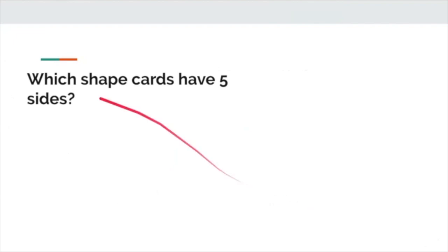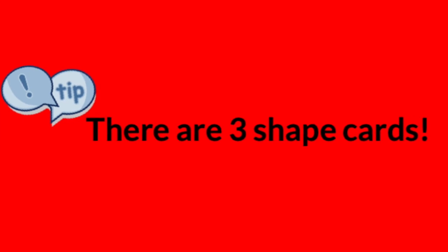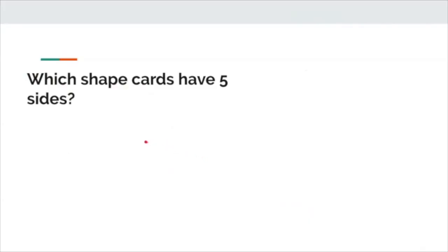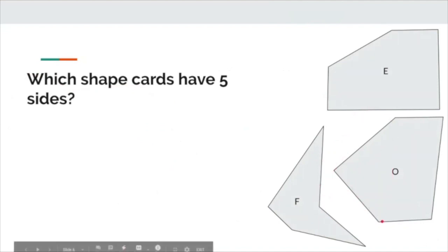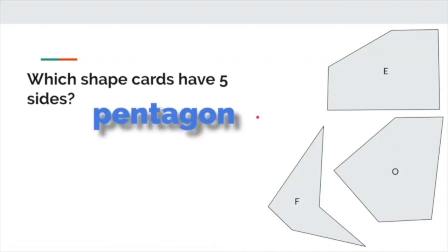We're going to move forward to the rest of the shape cards. This time I want you to find the shape cards that have five sides. Press play when you're ready. If you found shapes E, F, and O, you are correct — they all have five sides. The name for a five-sided shape is called a pentagon. Will you say that with me? Pentagon.